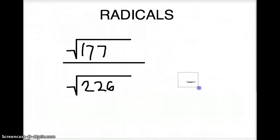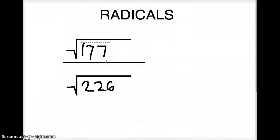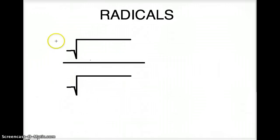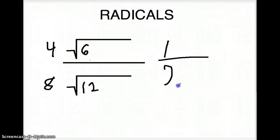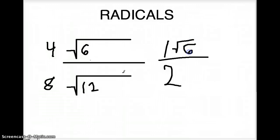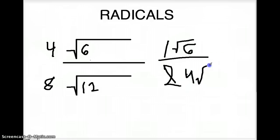Let's do one last problem: 4 square roots of 6 over 8 square roots of 12. We realize we can simplify 4 over 8 to 1 half. So we have 1 over 2, and we keep the square root of 6. For the square root of 12, we get 4 and 3, giving us 2 times 2 square roots of 3, which equals 4 square roots of 3. So the final expression simplifies from there.